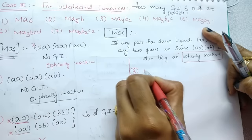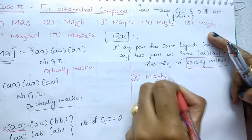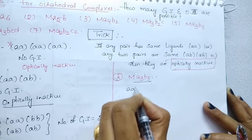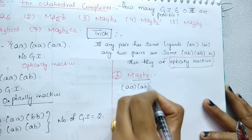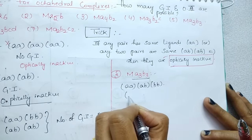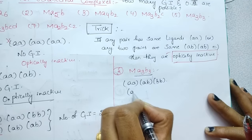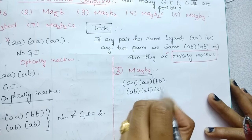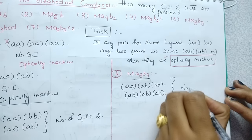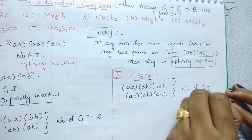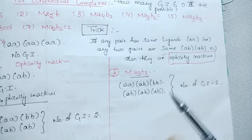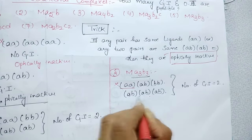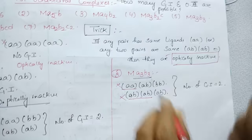Number 5: MA3B3. How many combinations are possible? AA, AB, BB — one combination. And AB, AB, AB — another combination. So total 2 GIs. The first is not optically active. The second also has two same pairs, so it is optically inactive.